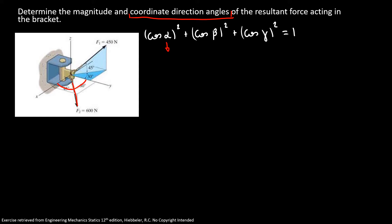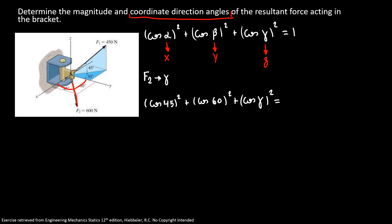Alpha is usually the angle with the x-axis, beta is the angle with the y-axis, and gamma is our angle with the z-axis. Now we're going to find the gamma angle for force 2 using this equation. So I have: cosine²(45°) + cosine²(60°) + cosine²(γ) = 1.